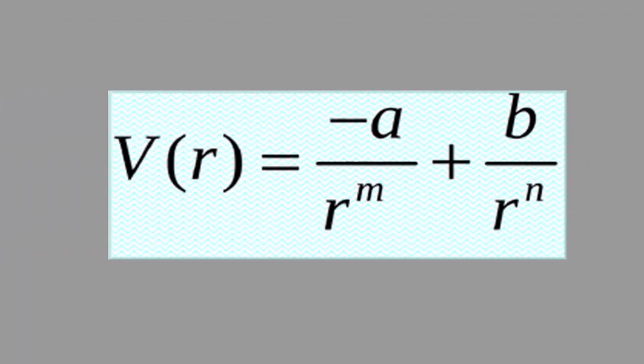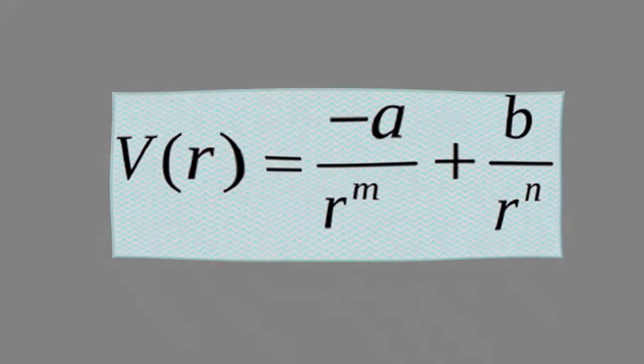The formula of potential is V(r) = -a/r^m + b/r^n. In this formula, V(r) is the net potential energy of interaction as a function of r, the distance between atoms, ions, or molecules. A and B are proportionality constants of attraction and repulsion, respectively. M and N are constants characteristic of each type of bond and type of structure.